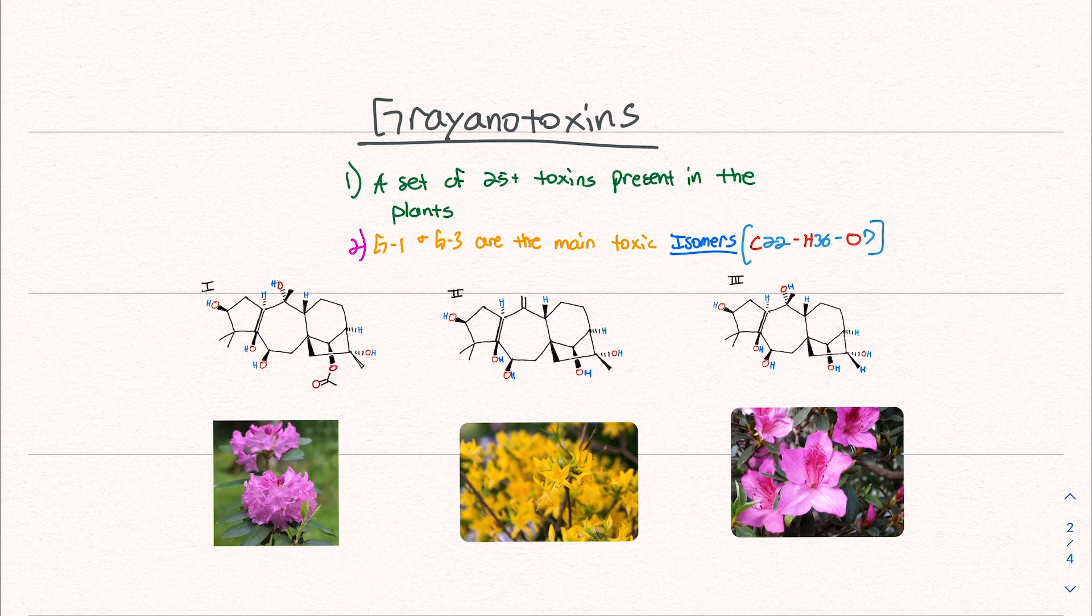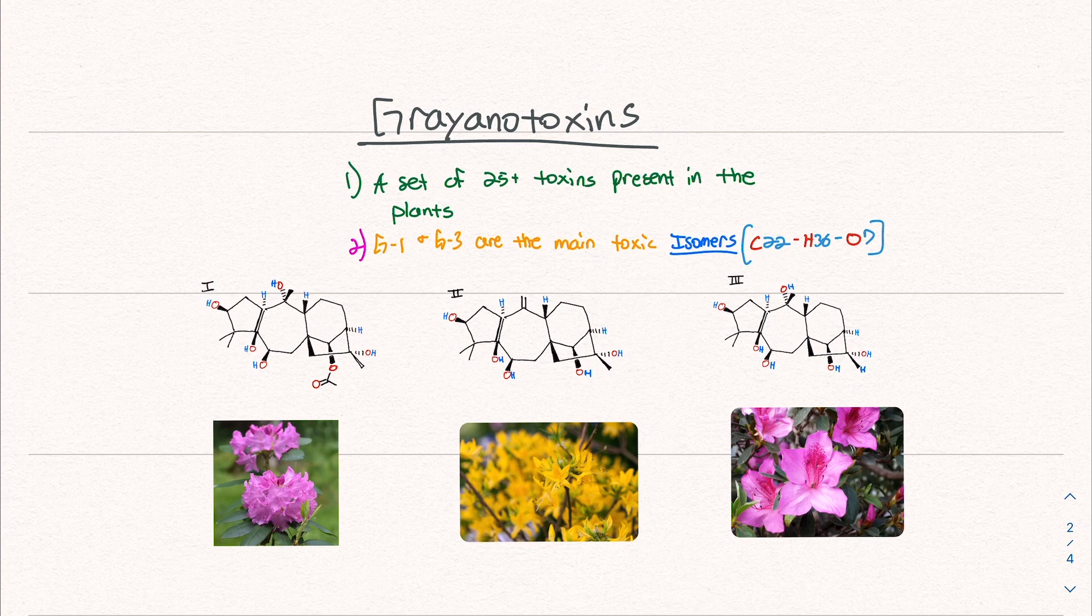I mentioned that this honey, these plants contain things called granotoxins. These toxins are a set of over 25 present in the plants. In my research, I saw a paper that said 18, one said more than 25. In general, there's a bunch of these toxins. Most of them are not fully understood, but we do know that G1, G2, and G3 are the main ones. G1 and 3 being the most toxic isomers.